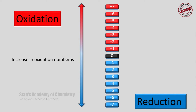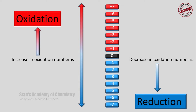Whenever there is an increase in oxidation number, the process can be considered as oxidation. So if the oxidation number changes from 0 to +2, the process is oxidation. Or if the oxidation number changes from -4 to -2, again it is considered to be oxidation. Similarly, a decrease in oxidation number can be considered as reduction. When the oxidation number changes from 0 to -2, or from +7 to +5, it would be considered as reduction. So we can identify the process of oxidation and reduction if you are able to calculate the oxidation numbers.